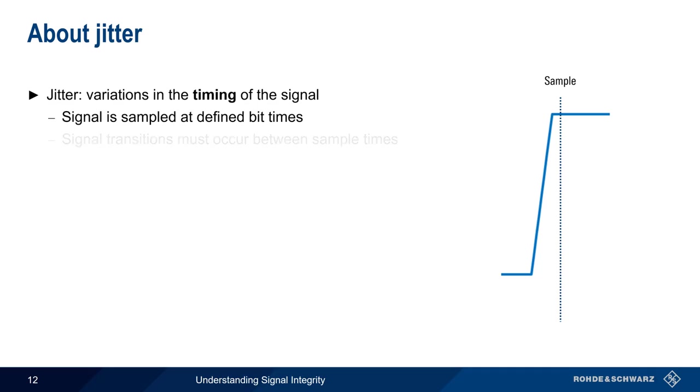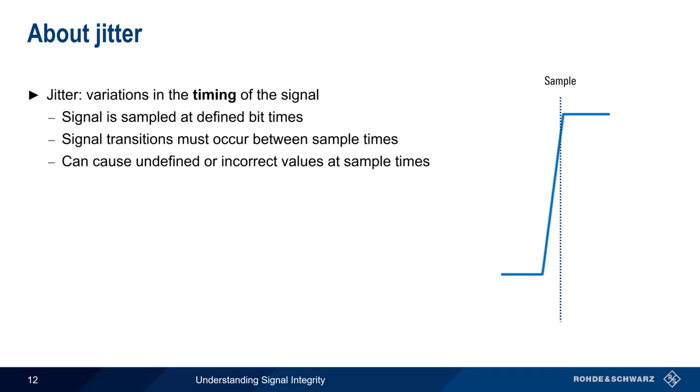If the signal needs to transition between states, this transition must occur between the sample times. Variations in timing can lead to undefined or incorrect values at the sample times, and this in turn can create bit errors.